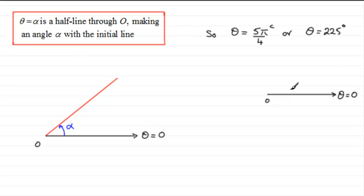And then 5 pi upon 4 is going to take us down in this direction. So this angle in here would be an angle of 5 pi upon 4 radians. We'll just mark a C there for the radians.